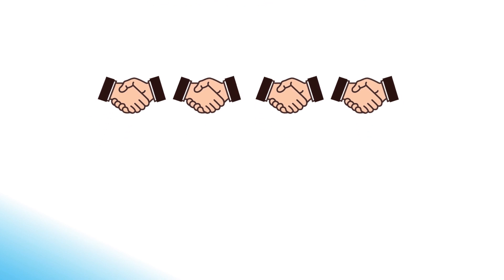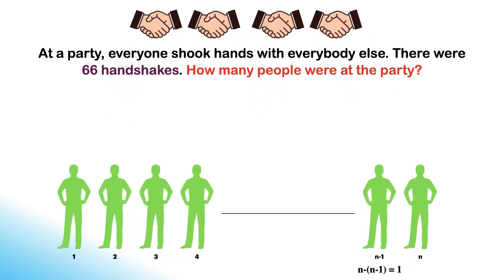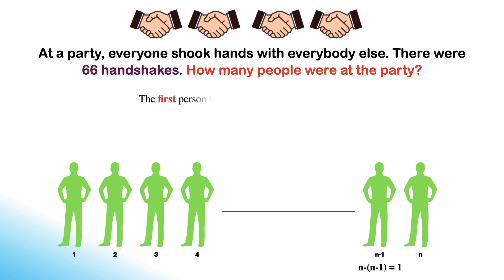Let me explain the solution now. Let's suppose that there are n number of people in the party. The first person will shake hand with n minus 1 people.